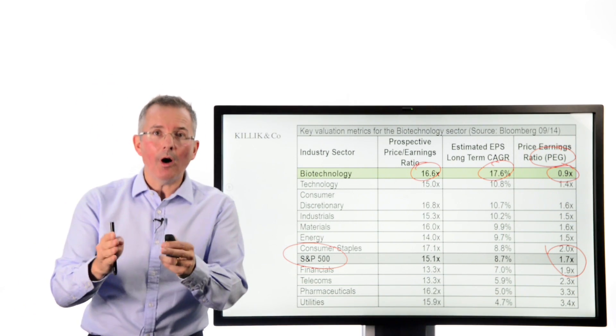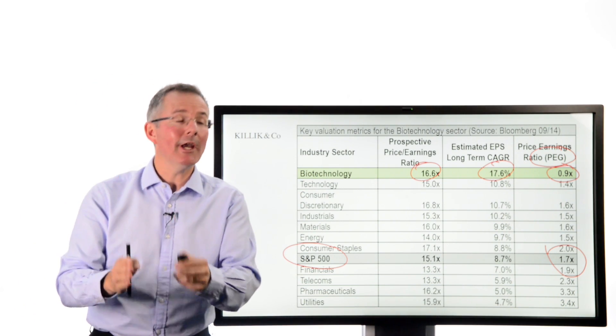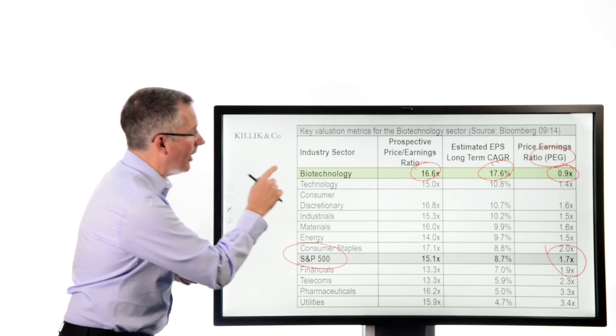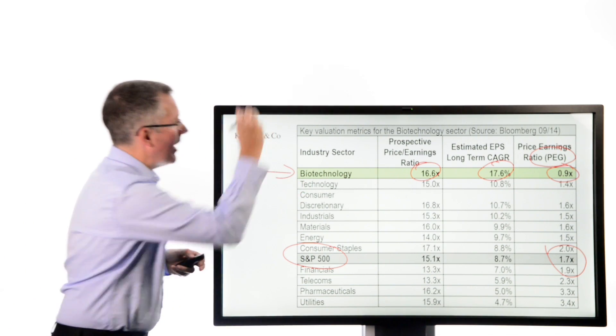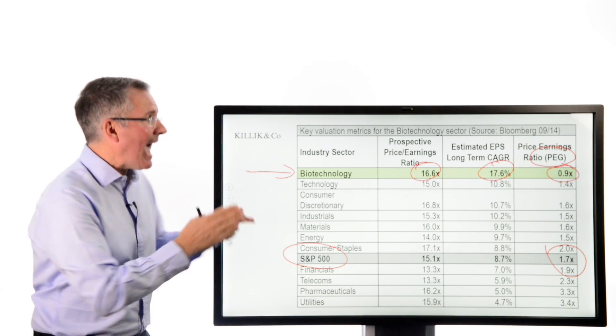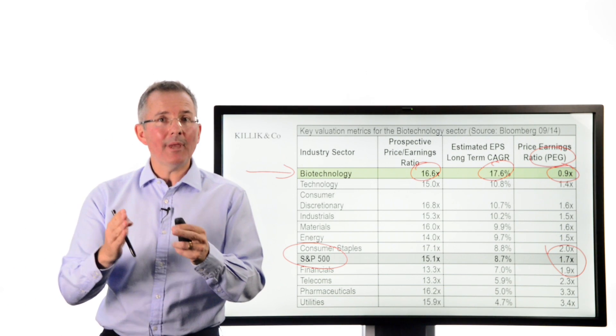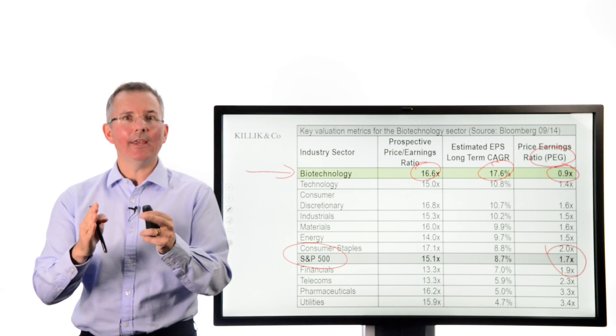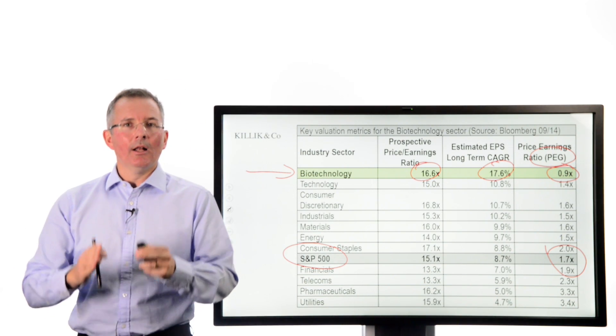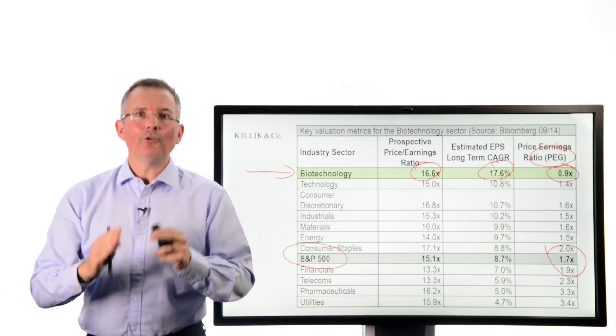But there is a sector. Now, this is not a piece of advice, I hasten to add in this video. But there is a sector out there at the time the snapshot was done with a relatively low PEG and a PEG below 1. And some people say happy days, happy hunting ground. I'd say let's do some more work. Why?